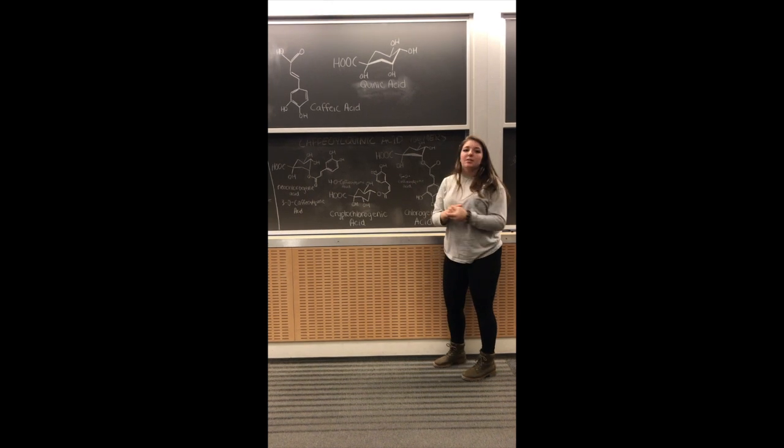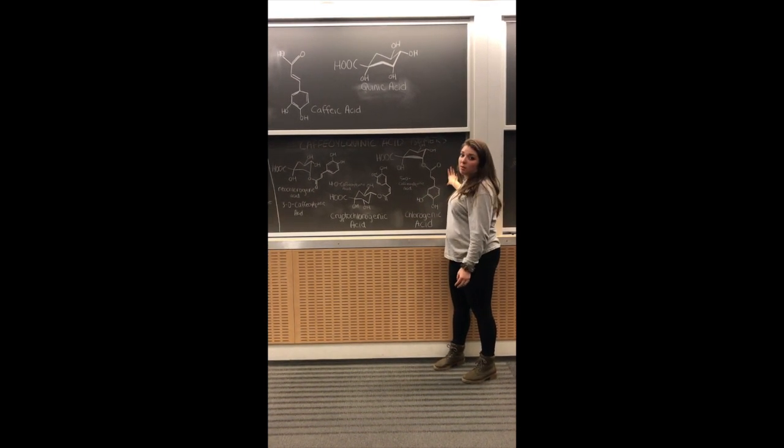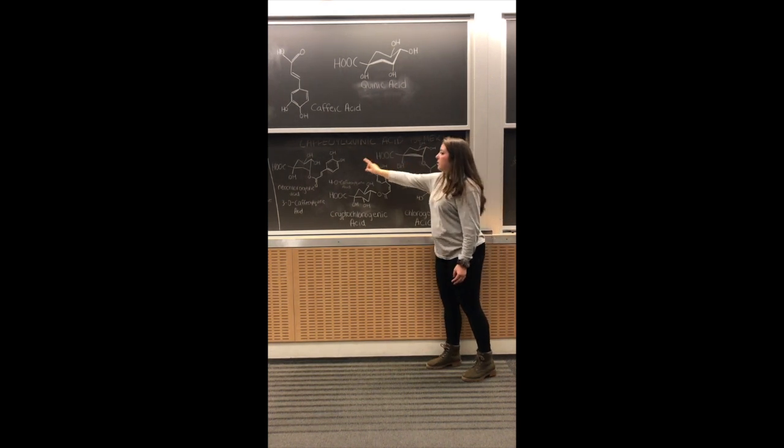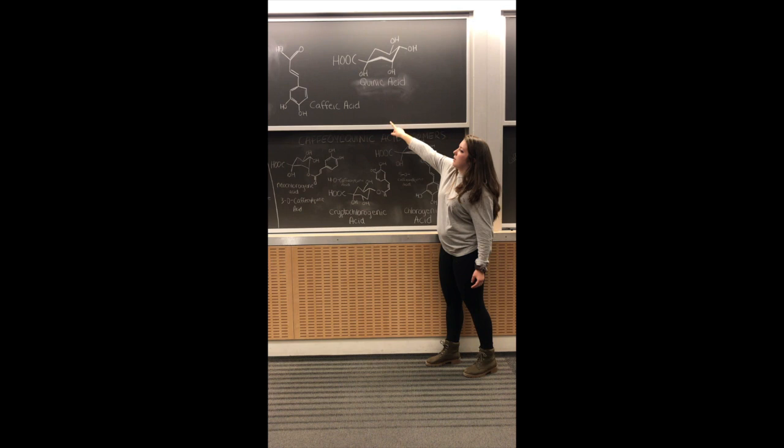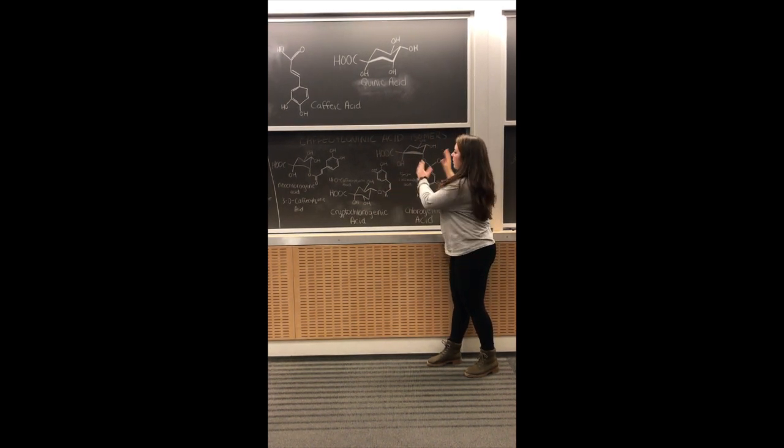So, what is an isomer? An isomer is specifically these three compounds. They have the same chemical formula, but they have different orientations of the caffeic acid and quinic acid around each compound.